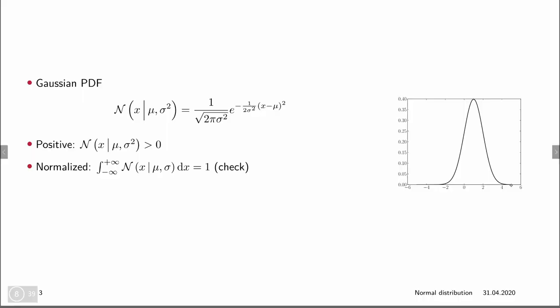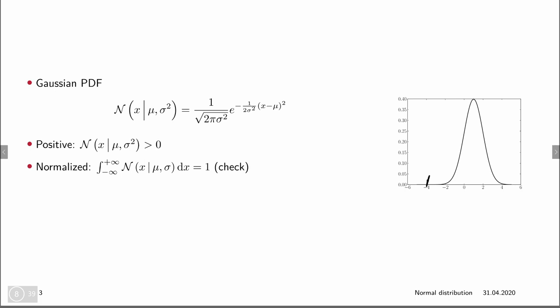It is a probability density function, so it is non-negative — in fact, the Gaussian distribution is always strictly positive. Even in the tails it is positive, just very tiny, so numerically it may read as zero on a computer. Because it is a probability density, it needs to be normalized: the integral from minus infinity to plus infinity of the normal distribution over x equals one. This is exactly where the one over the square root of two pi sigma squared comes from, since integrating just the exponential part gives back square root of two pi sigma squared. That is why it is called the normalizing constant.